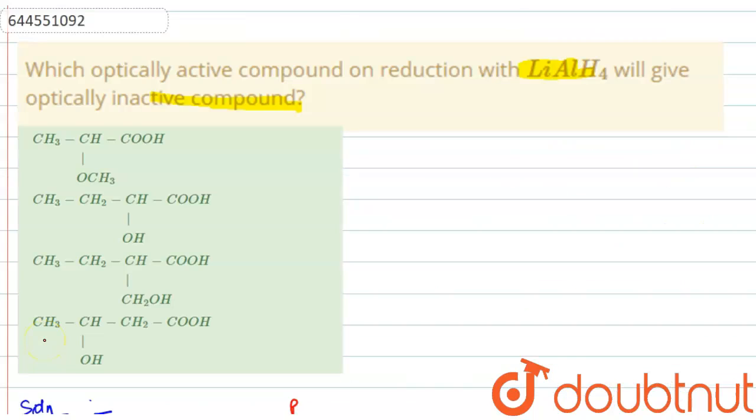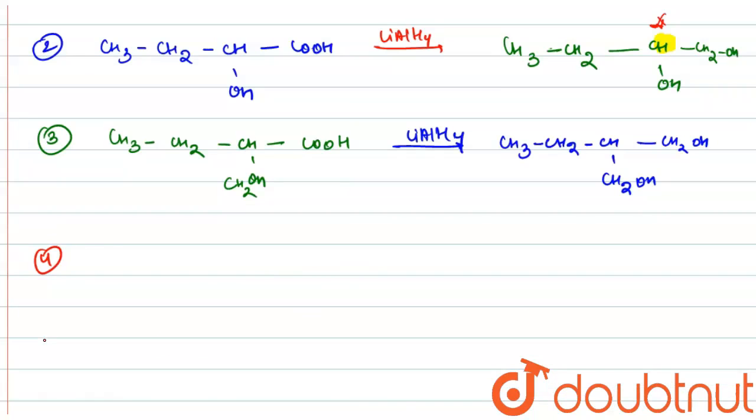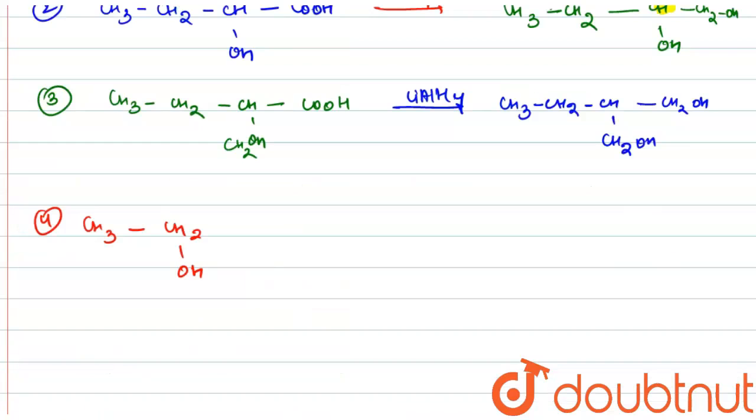CH3-CH-CH2-CH2-CH-OH-COOH. On reacting with LiAlH4, COOH converts to CH2OH.